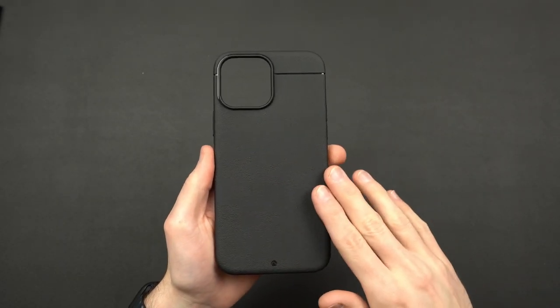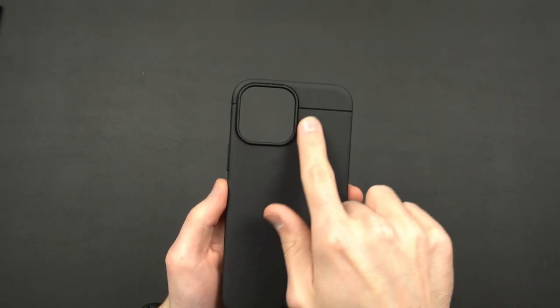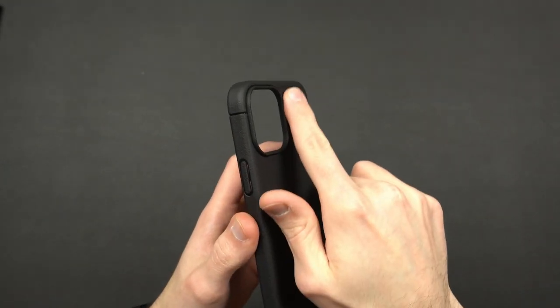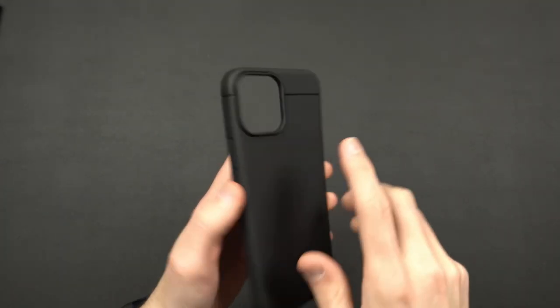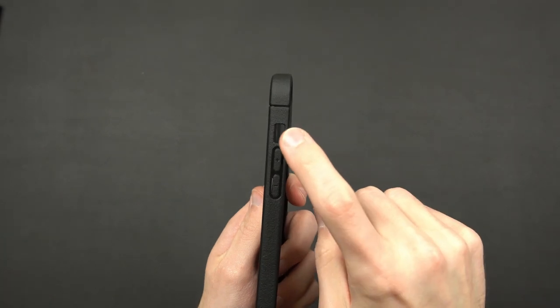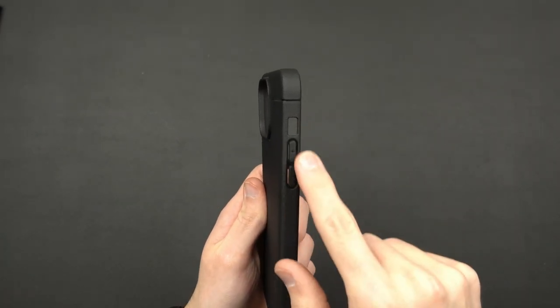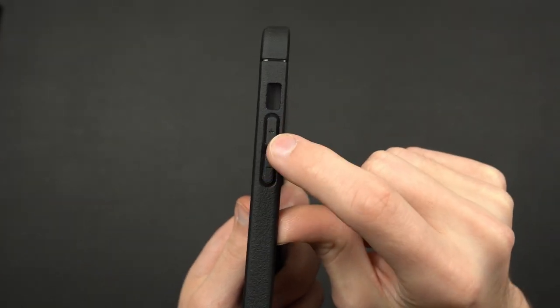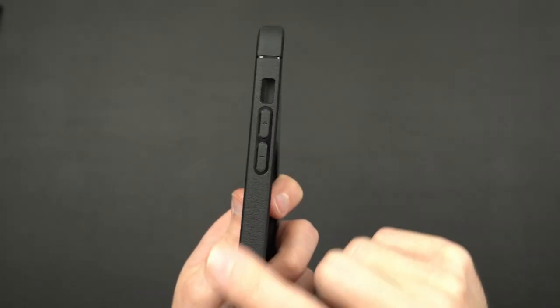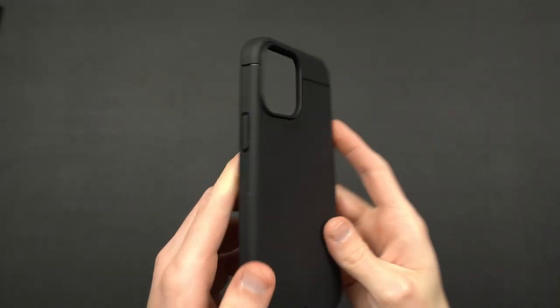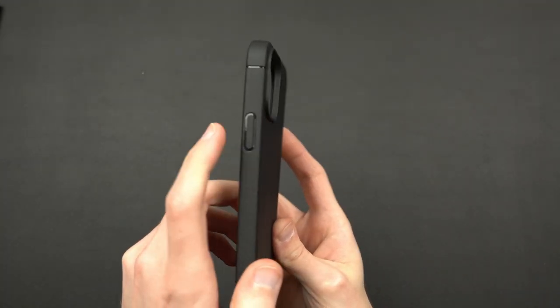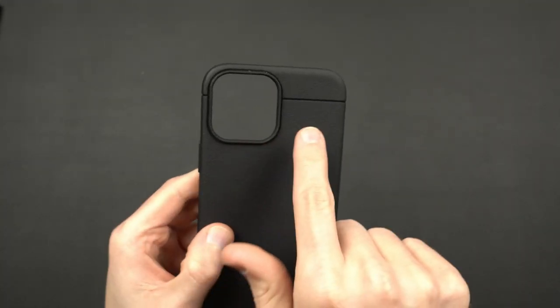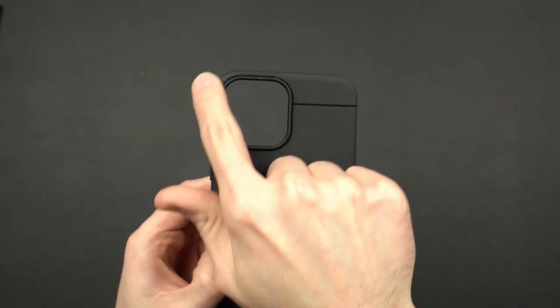The buttons are also made out of that same material, so this whole case is this textured material and I can tell you firsthand it is very comfortable. You do get a ring around your camera lenses here so they are going to be protected. And then you get your power button, your volume buttons, and your mute slider. Around all of these they kind of accented them with this glossy finish - so that's what's underneath this texture material of the case.